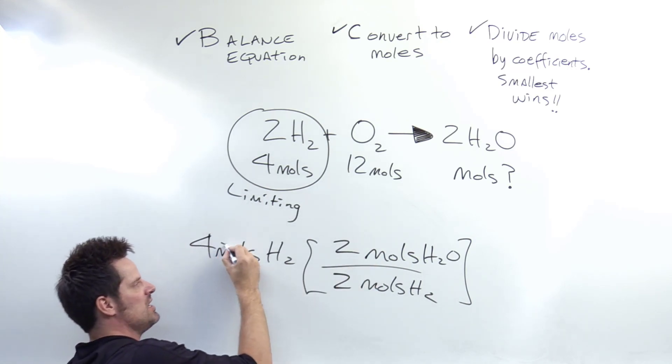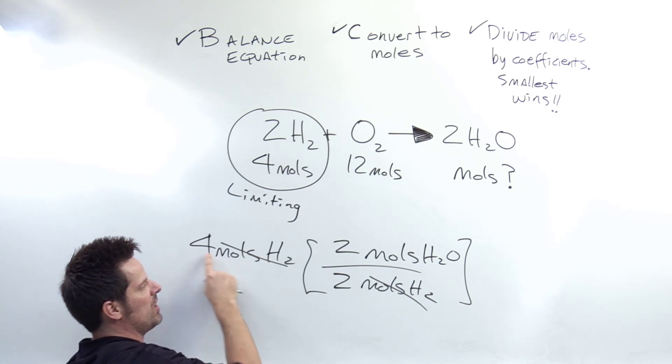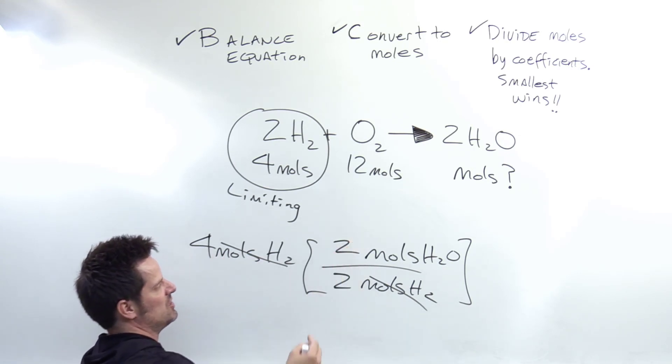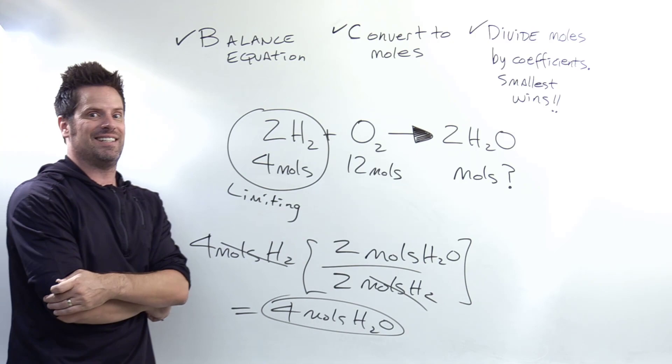You'll notice that unit wise, the moles H2 cancel each other out. I'm left with moles of H2O. So now it's just number crunching. Four divided by two is two, multiplied by two is equal to four. So this ends up giving me four moles of H2O, which is this question's correct answer.